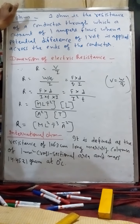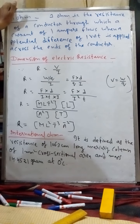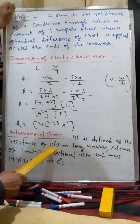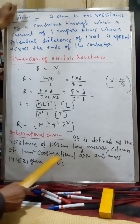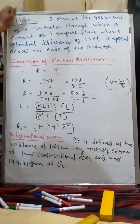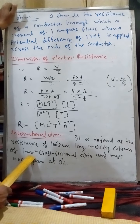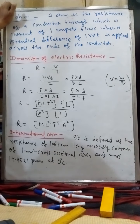No need to memorize this — if you know the formula you can derive the dimensions. Now, International Ohm: it is defined as the resistance of a 106.3 cm long mercury column with a 1 mm² cross-sectional area and a mass of 14.4521 grams at 0 degrees Celsius. That mercury column's resistance is called the International Ohm.